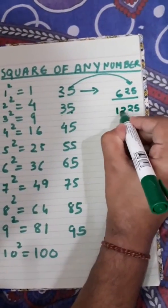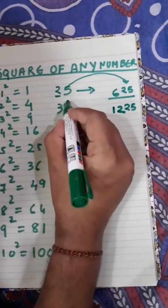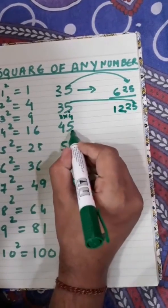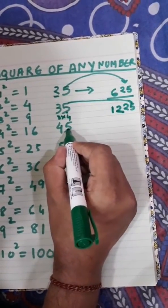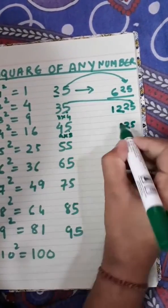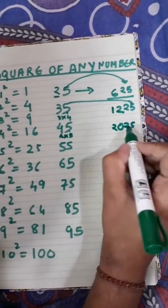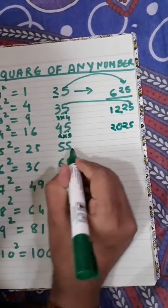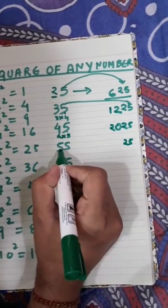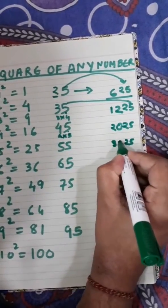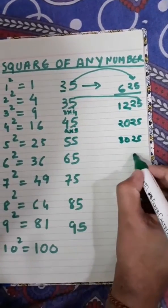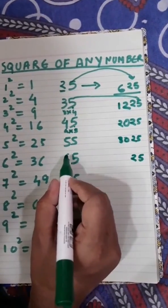For 45: write 25 first, then 4 × 5 = 20, giving 2025 as the square of 45. For 55: write 25 first, then 5 × 6 = 30, giving 3025 as the square of 55.